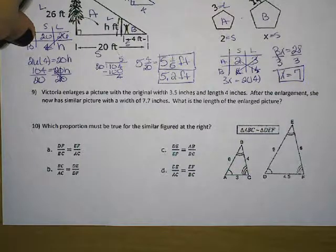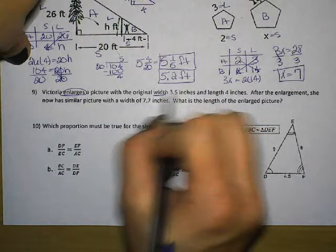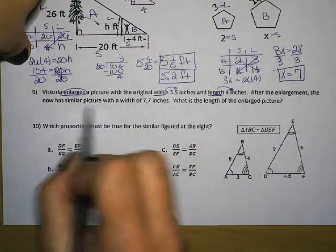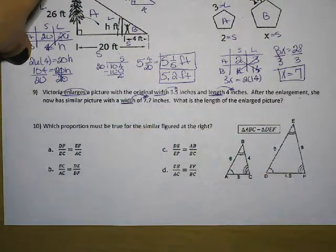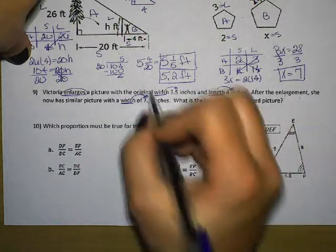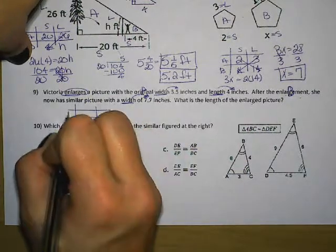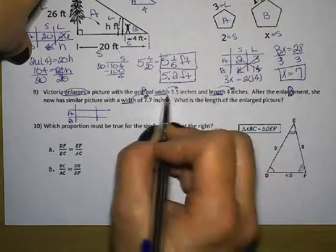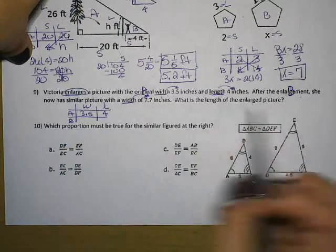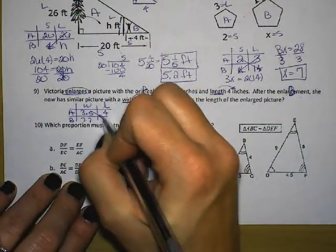Let's look at number 9. Victoria enlarges a picture with the original width of 3.5 inches and length of 4 inches. After the enlargement, she now has a similar picture with a width of 7.7 inches. What is the length of the enlarged picture? Well, I want to use original and enlarged, or I can label the original A and the enlarged B. I'm still going to set up the same proportions of A and B. I can use length and width on this one. Width and length. The width of A is 3.5, the length of A is 4. And they tell us that the width of B is 7.7, and we are looking for the length.